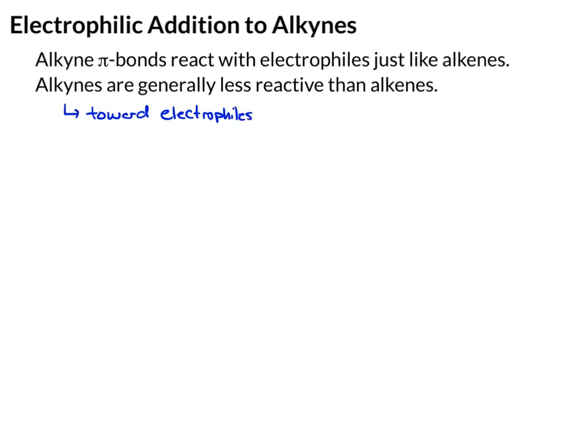Even though the alkyne pi bond is a bit weaker, and in general thought to be more reactive than the alkene, it has to do with what product we would get. The easiest way to see this is by comparing two reactions. Here's a 3-carbon alkene and here's a 3-carbon alkyne. The alkyne pi bond is a weaker bond than the alkene pi bond, but the alkene is more reactive toward an electrophile.